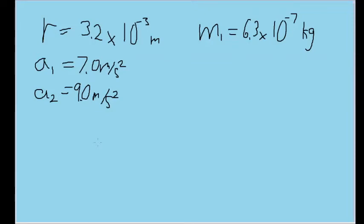In this problem, we have two equally charged particles held at a distance of r equals 3.2 times 10 to the negative third meters from one another. Once they are released from rest, both particles begin accelerating. Particle 1 initially accelerates at 7 meters per second squared, and particle 2 starts accelerating at 9 meters per second squared.